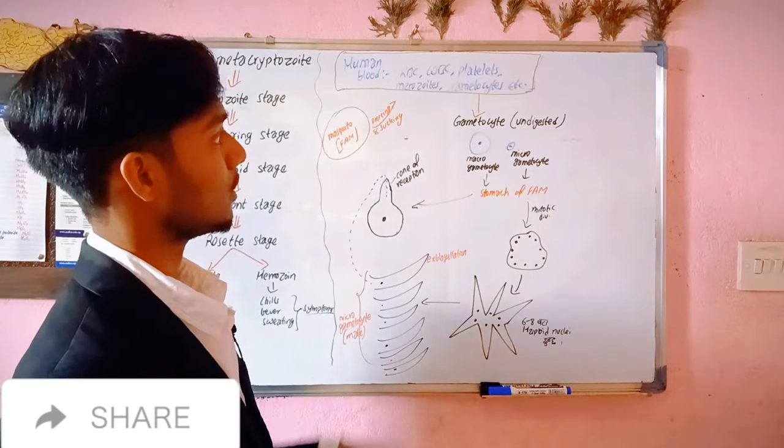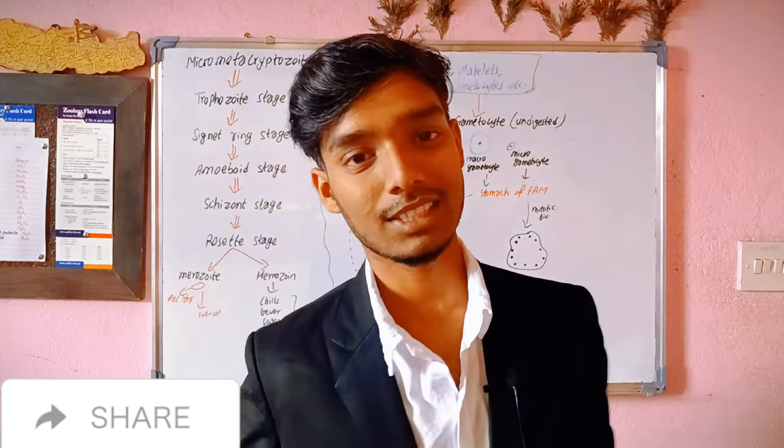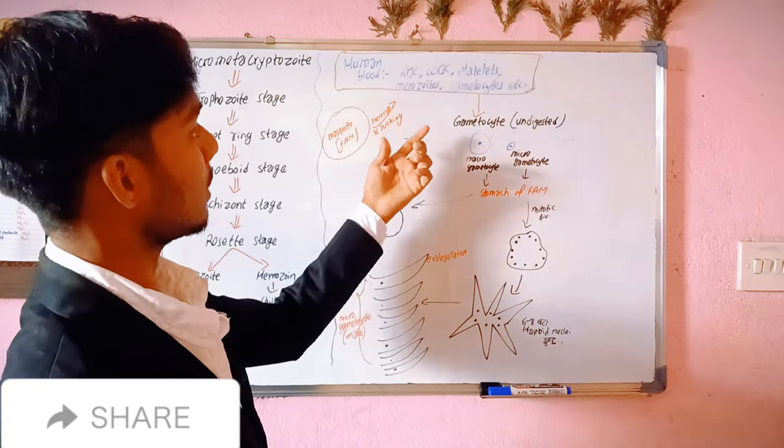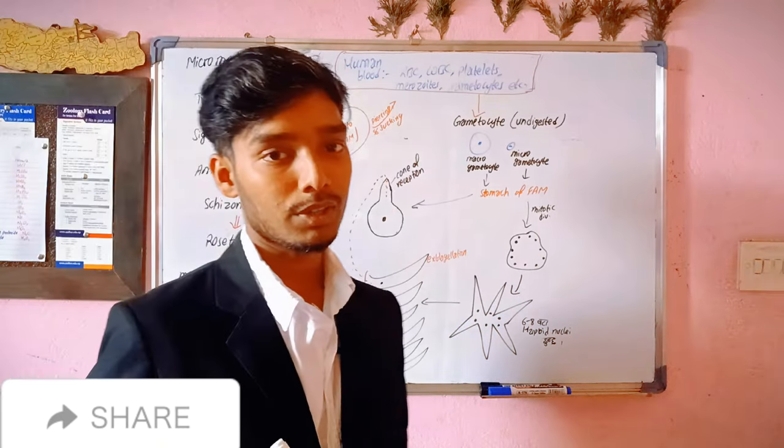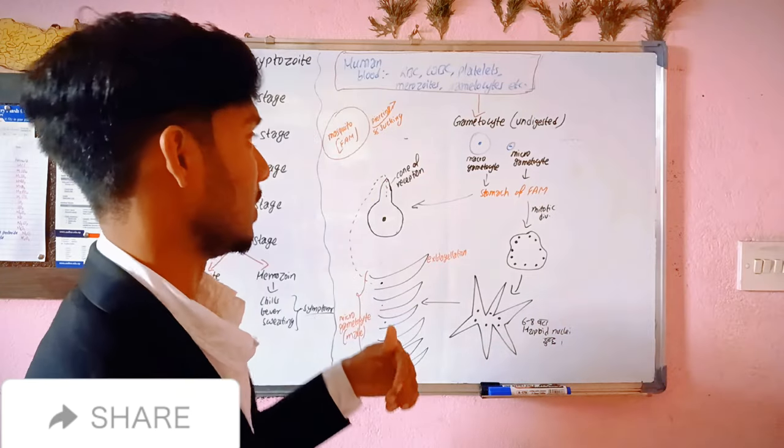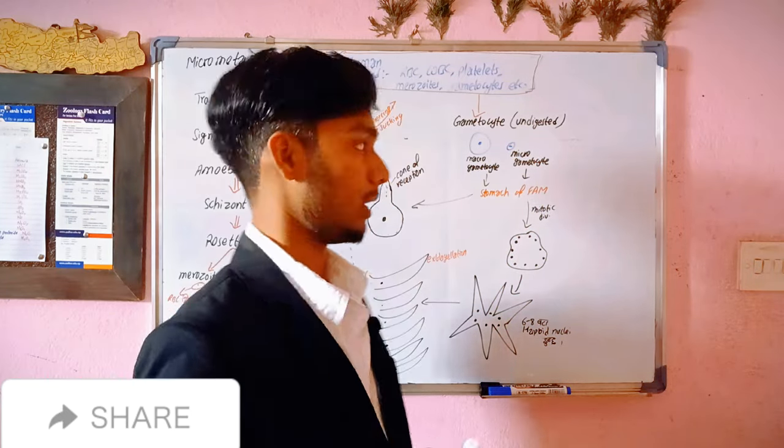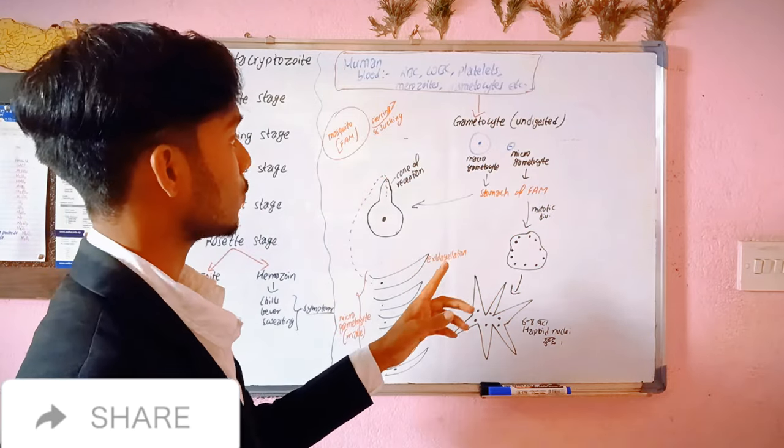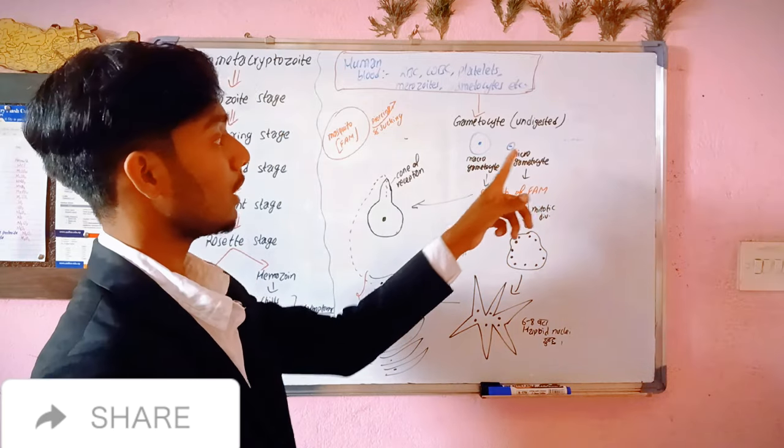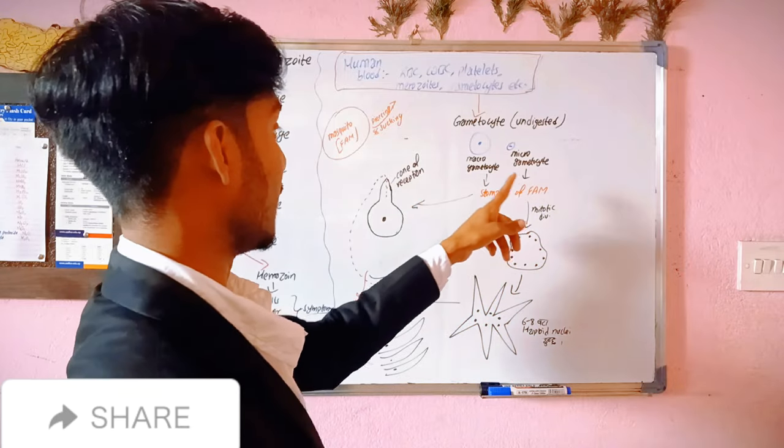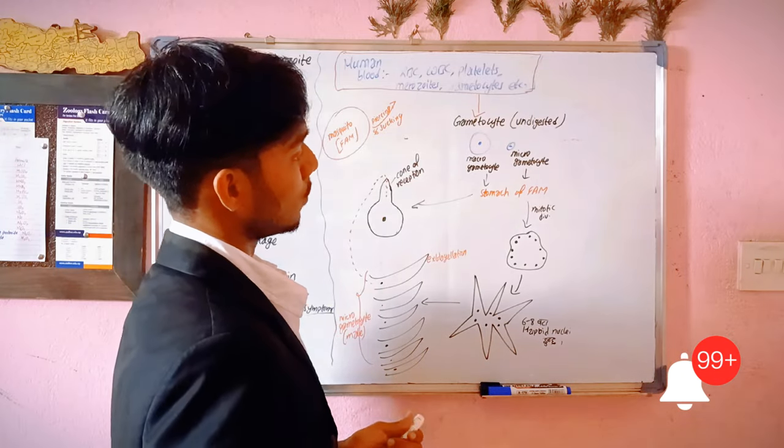In human blood there are RBC, WBC, platelets, merozoites, and gametocytes. When female Anopheles mosquito takes the blood, what happens? Gametocytes remain undigested. The female Anopheles mosquito absorbs the gametocytes.